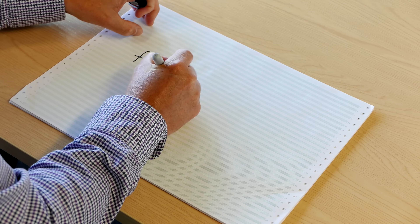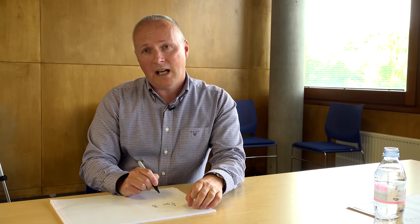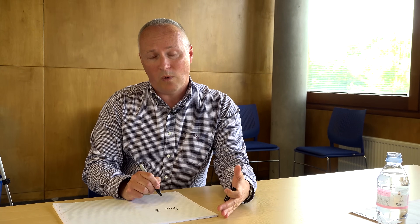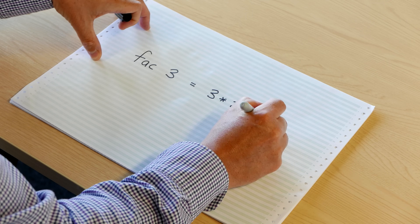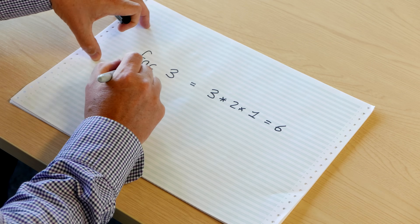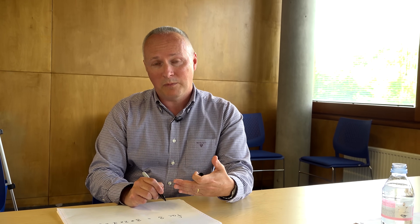A simple example of this is the well-known factorial function. The way factorial works is you give it a number like 3, and it's going to count down from 3 to 1 and multiply up all the numbers in between. So factorial of 3 would be 3 times 2 times 1, which gives us 6. The factorial function has a very simple and natural definition using recursion.